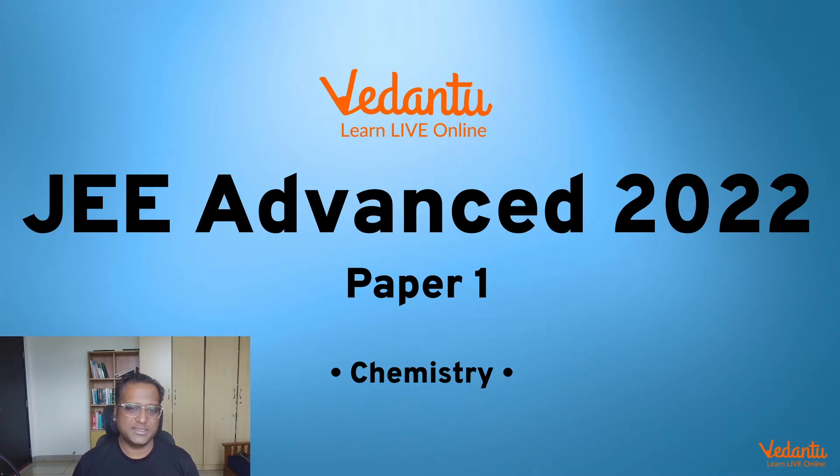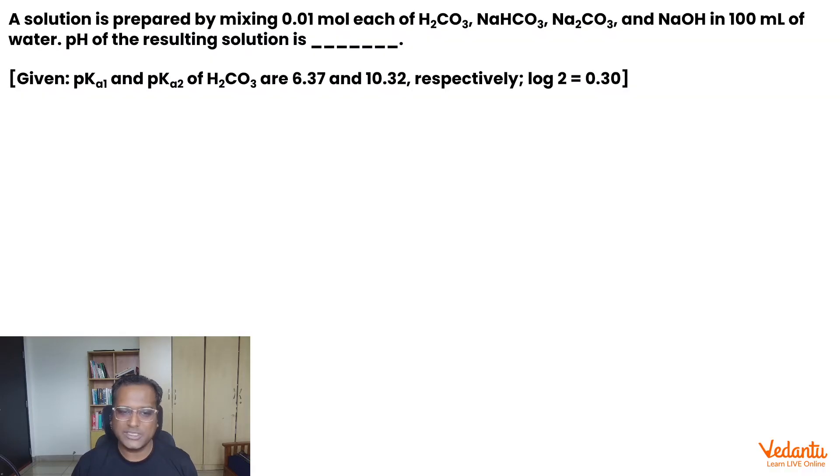Today we are going to talk about JEE Advanced 2022, Paper 1, Chemistry Section, Section 1 which had 8 numericals and we are going to talk about question number 3.